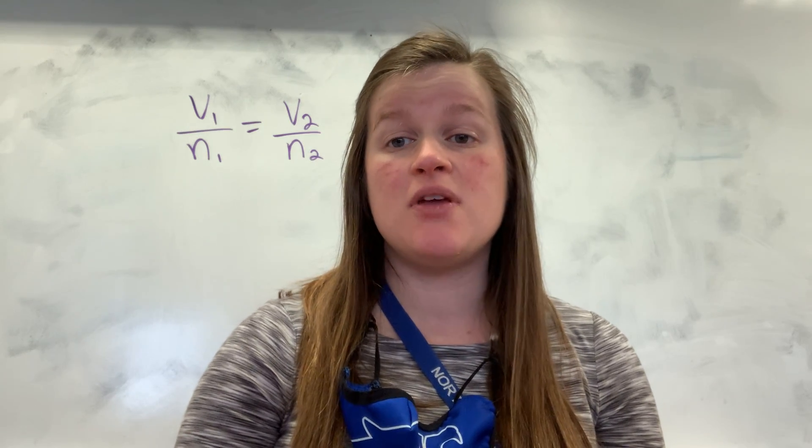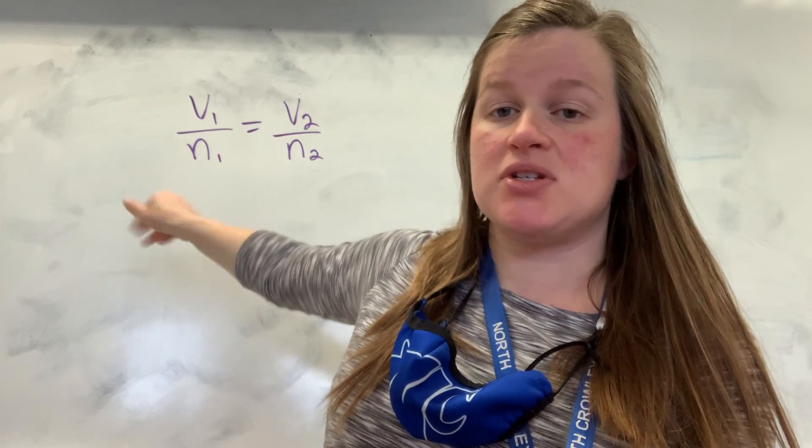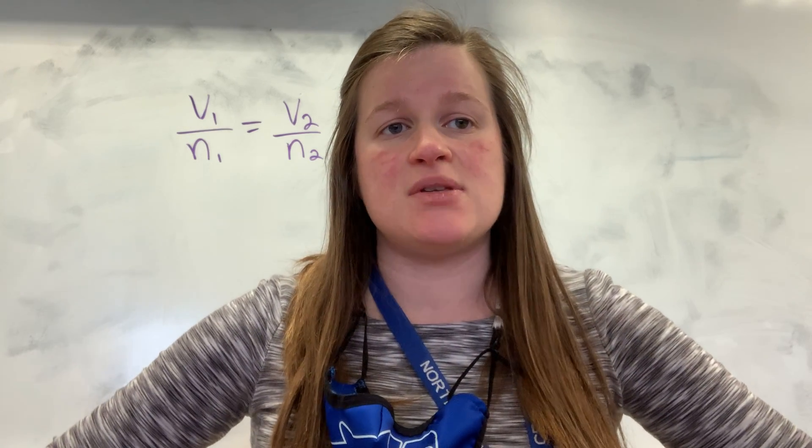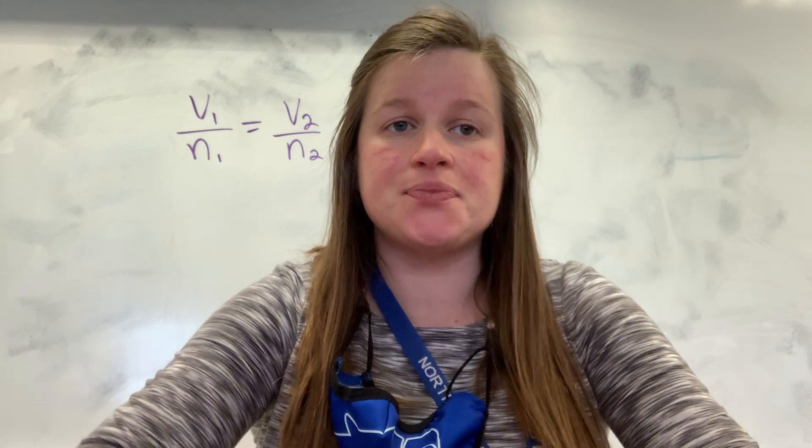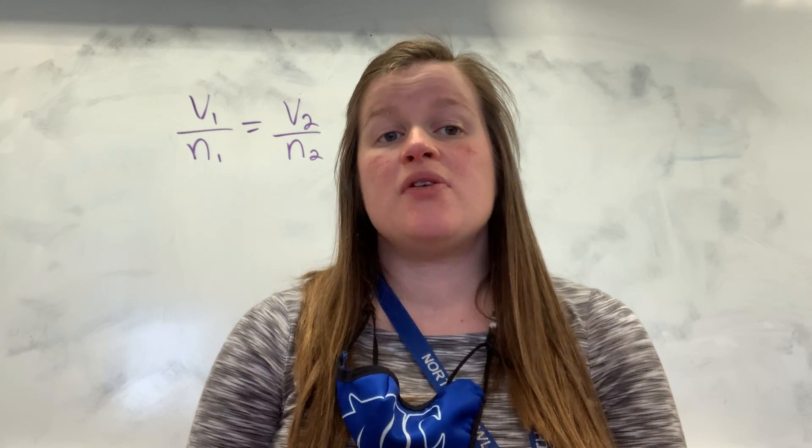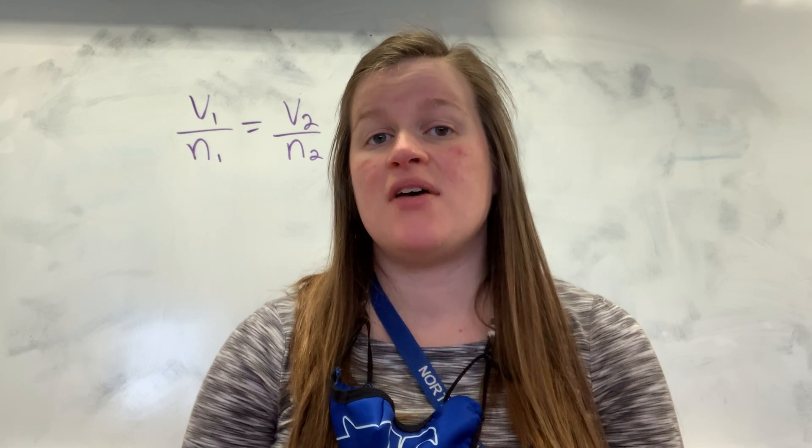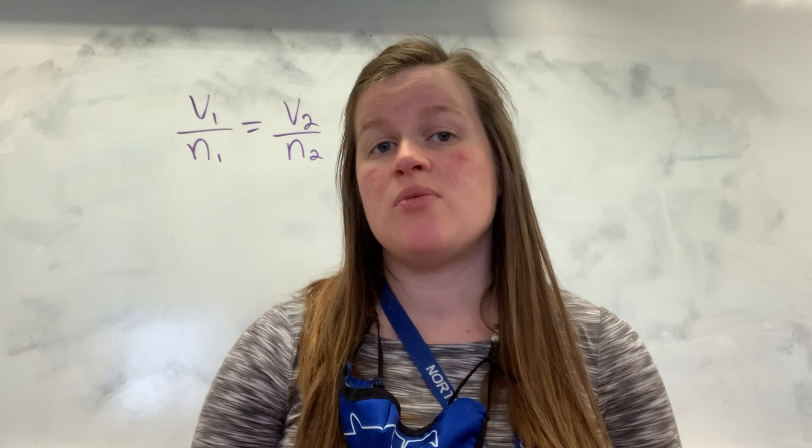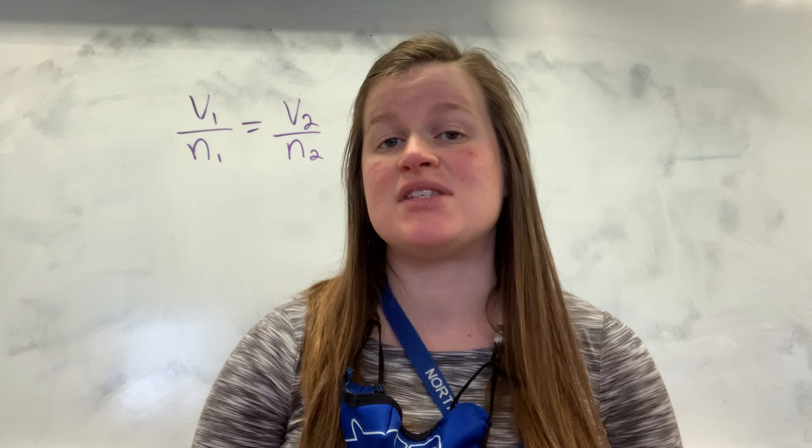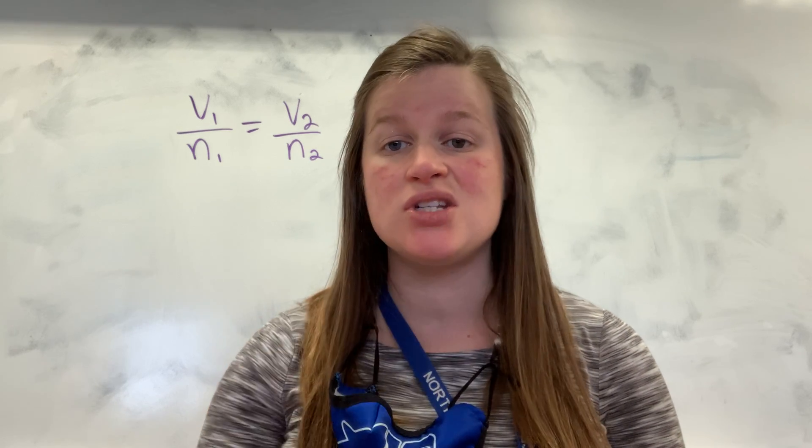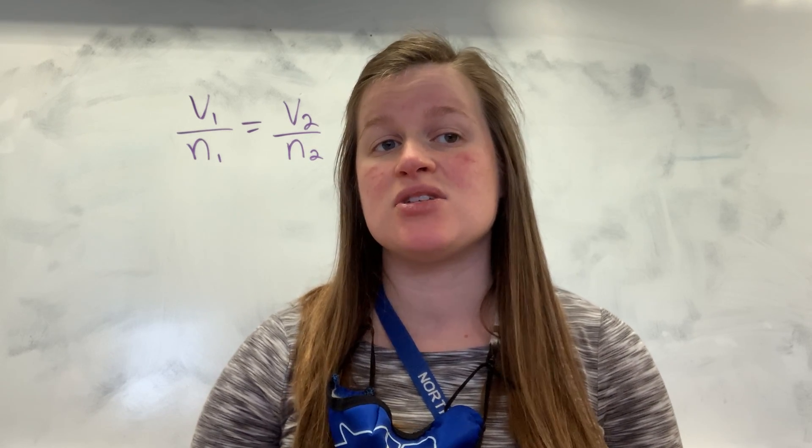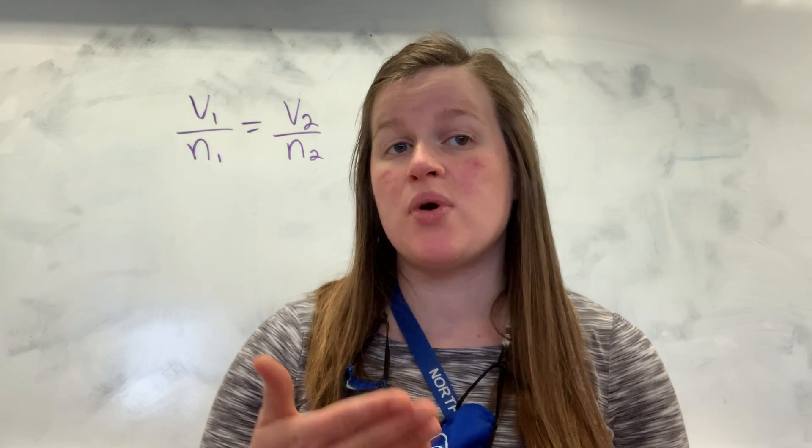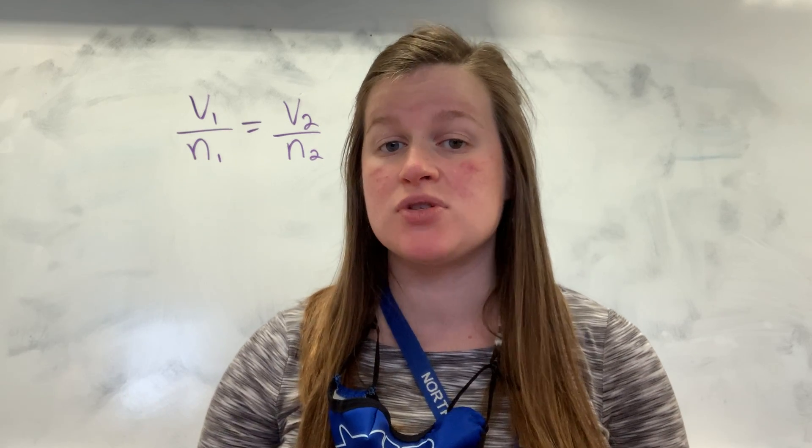And so we have this formula V1 over N1 equals V2 over N2. And so we're going to use that. So there's two example problems we're going to work. So it says in your notes, if I have 0.214 moles of argon gas occupies a volume of 652 milliliters at a particular temperature and pressure, what volume would 0.375 moles of argon have under the same conditions? So that means that we're not changing temperature, we're not changing pressure. When it says same conditions, we mean the same stuff from above. We're just adding now more moles. So we went from 0.214 moles to 0.375 moles. So what will be the volume?